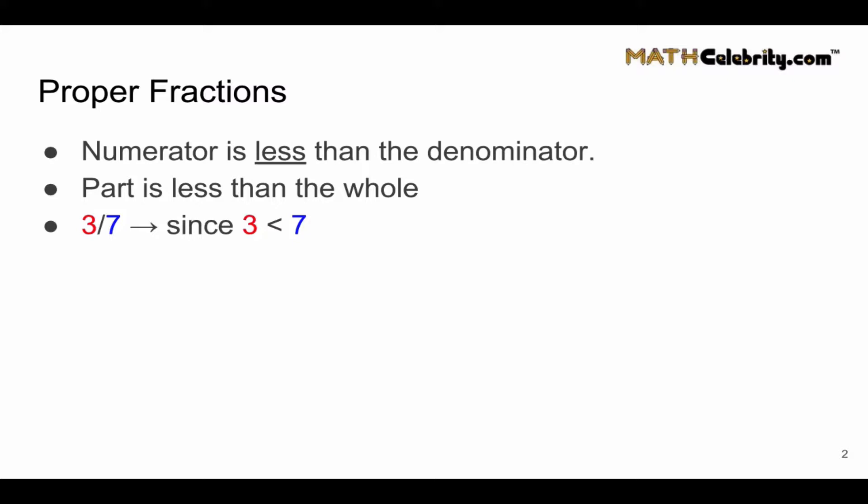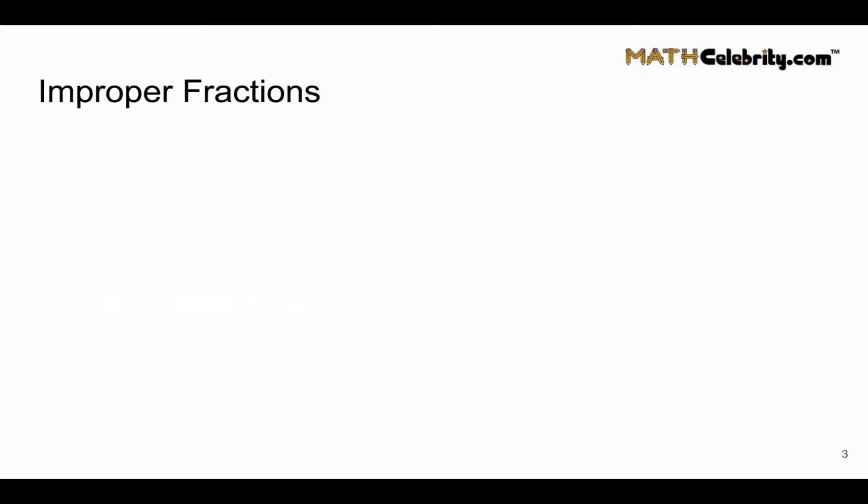So again, the numerator, which is in red, is less than the denominator. And when you see that, we classify that as a proper fraction. Four-ninths and seven-eighths. In all these examples, the numerator in red is less than the denominator in blue.